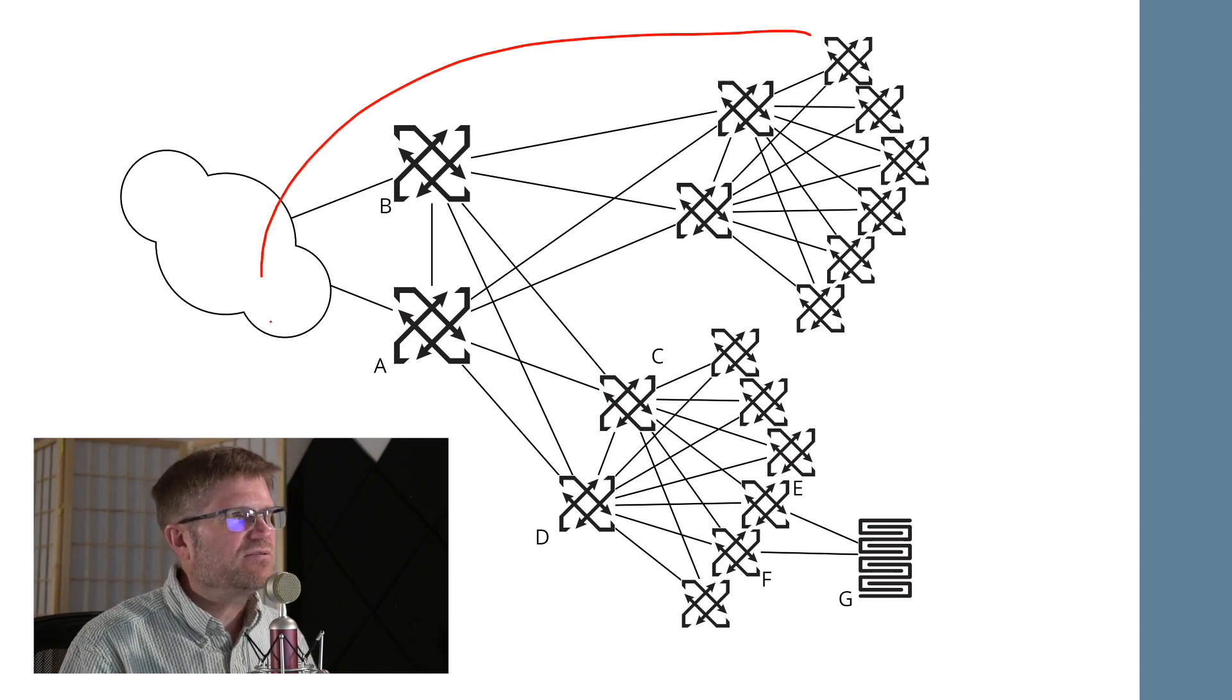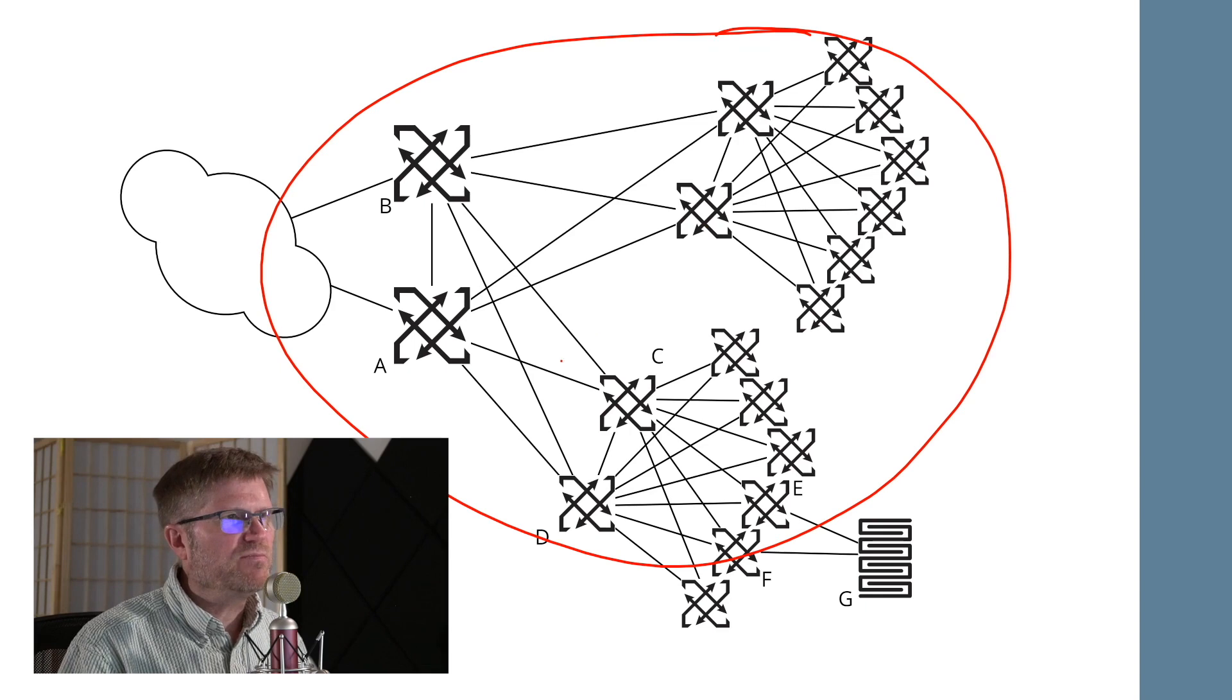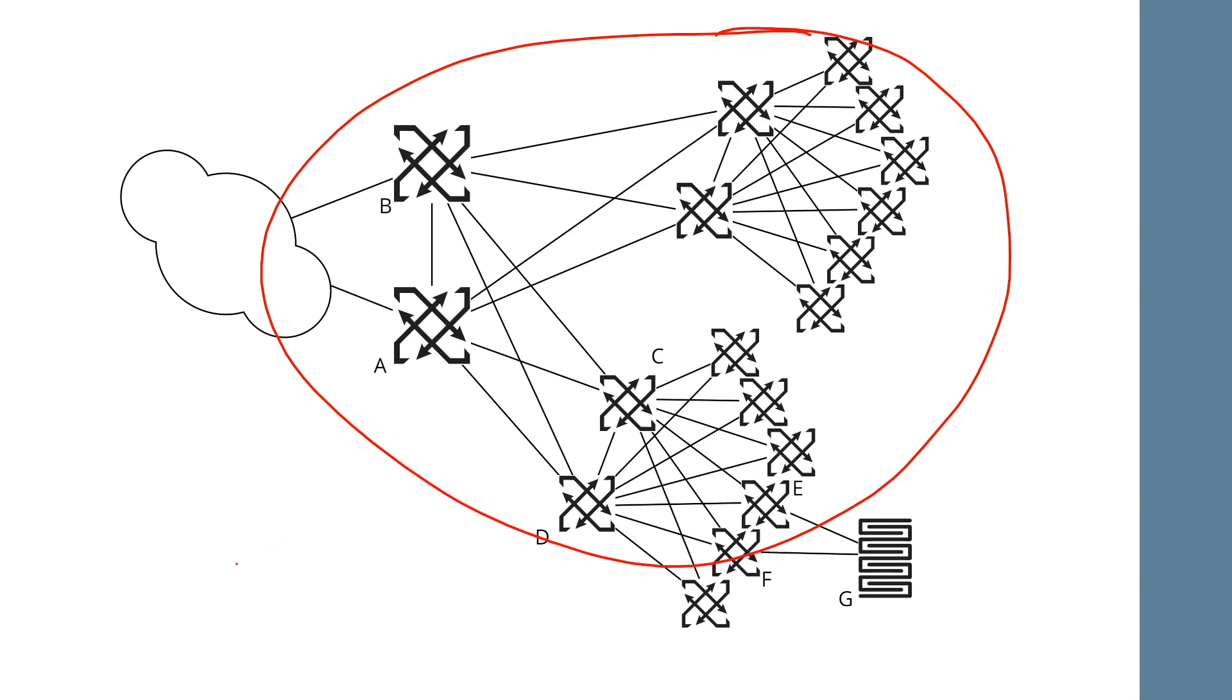This entire network is a single failure domain from a control plane perspective because the whole thing is probably running spanning tree or the moral equivalent. Now you may be able to use VLANs 802.1q or something like that to break up the broadcast failure domains on this network. But the entire network would be a single control plane failure domain.